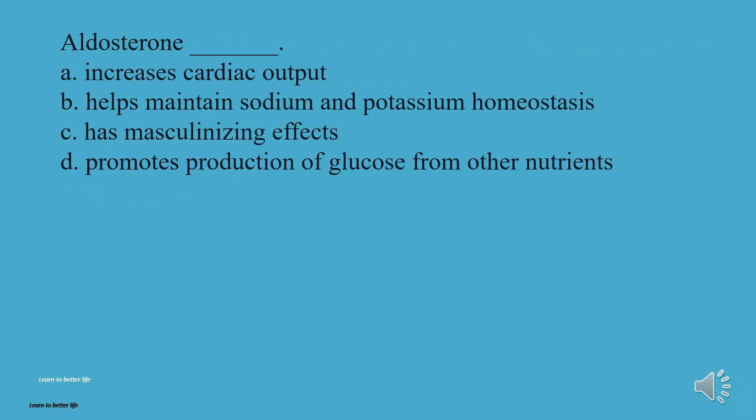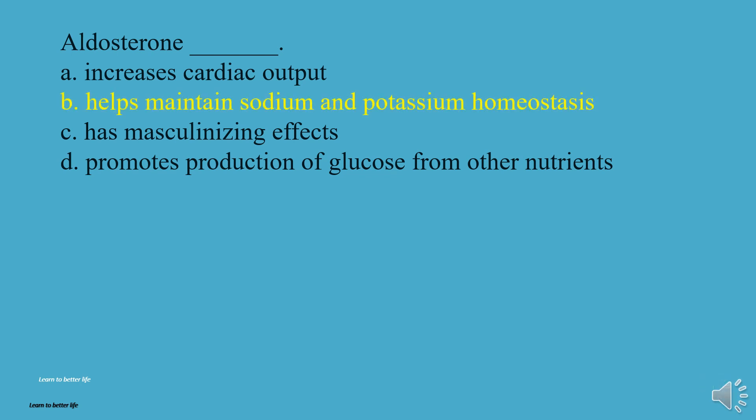Aldosterone: A, Increases cardiac output. B, Helps maintain sodium and potassium homeostasis. C, Has masculinizing effects. D, Promotes production of glucose from other nutrients. The answer is B, Helps maintain sodium and potassium homeostasis.